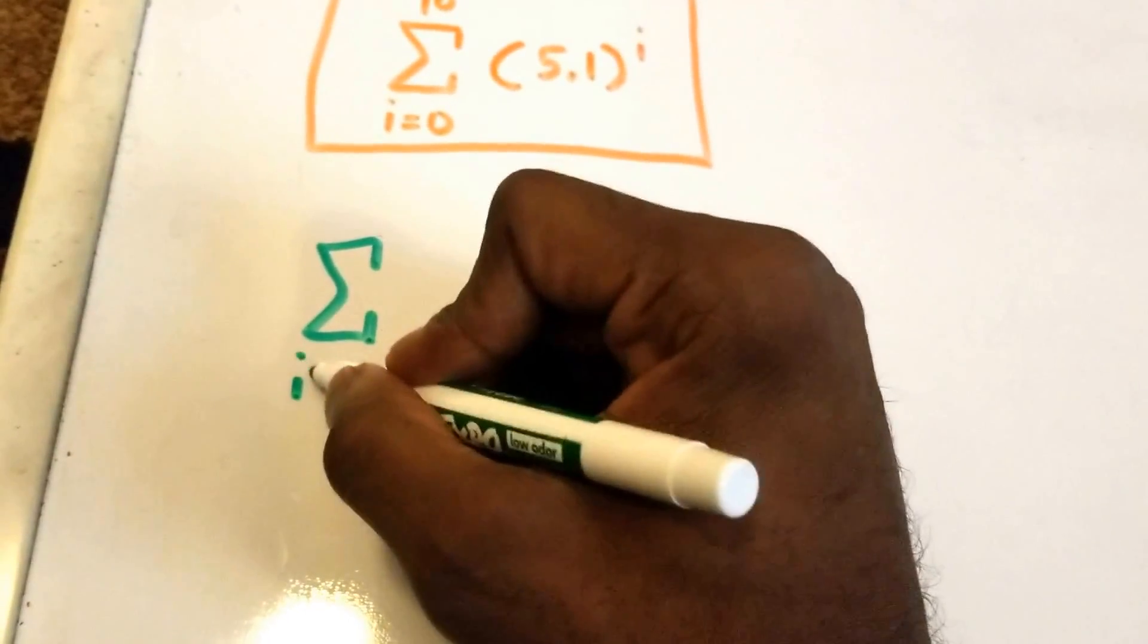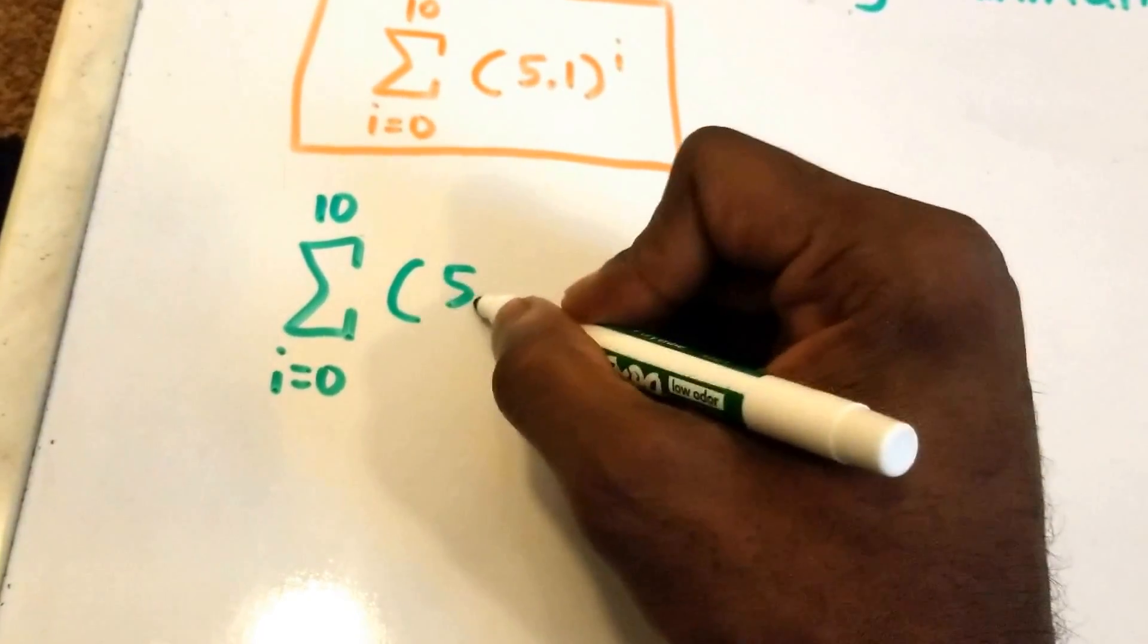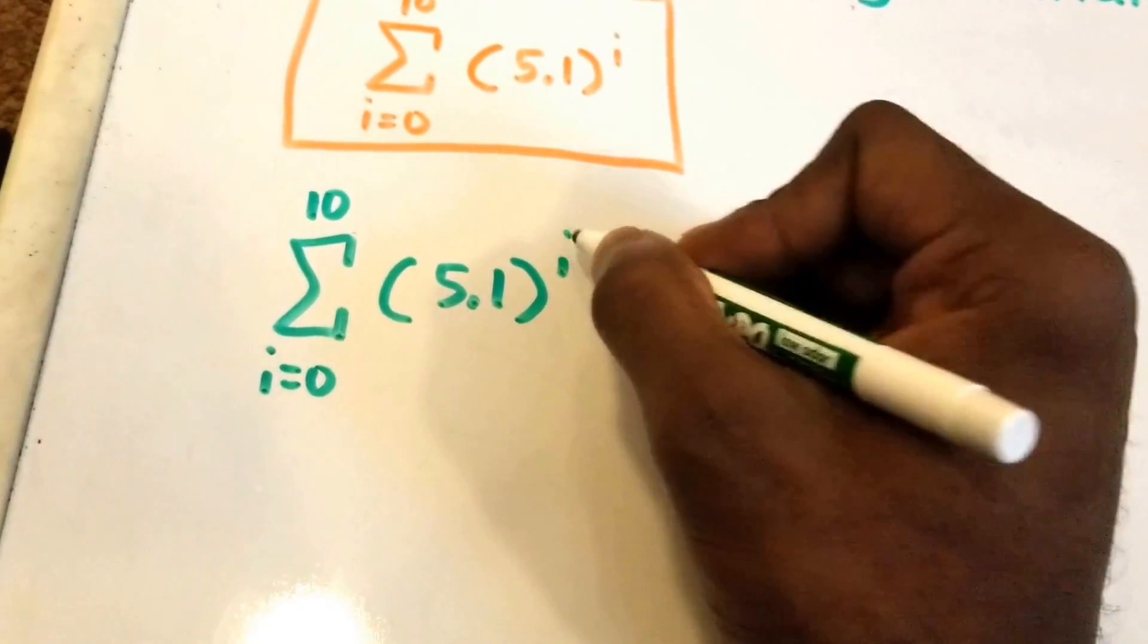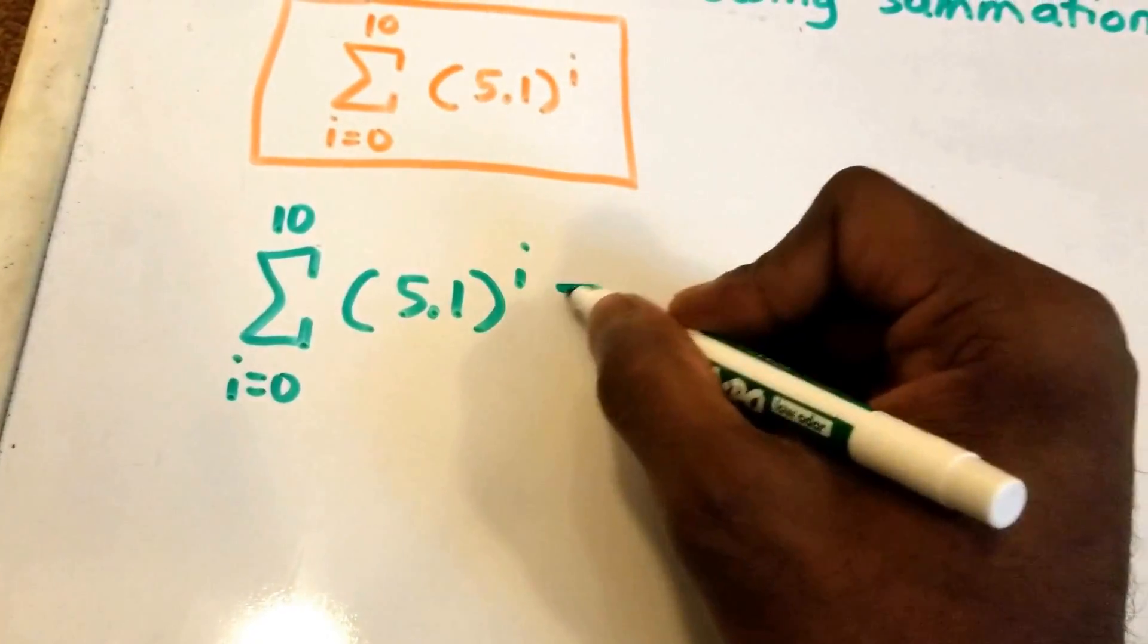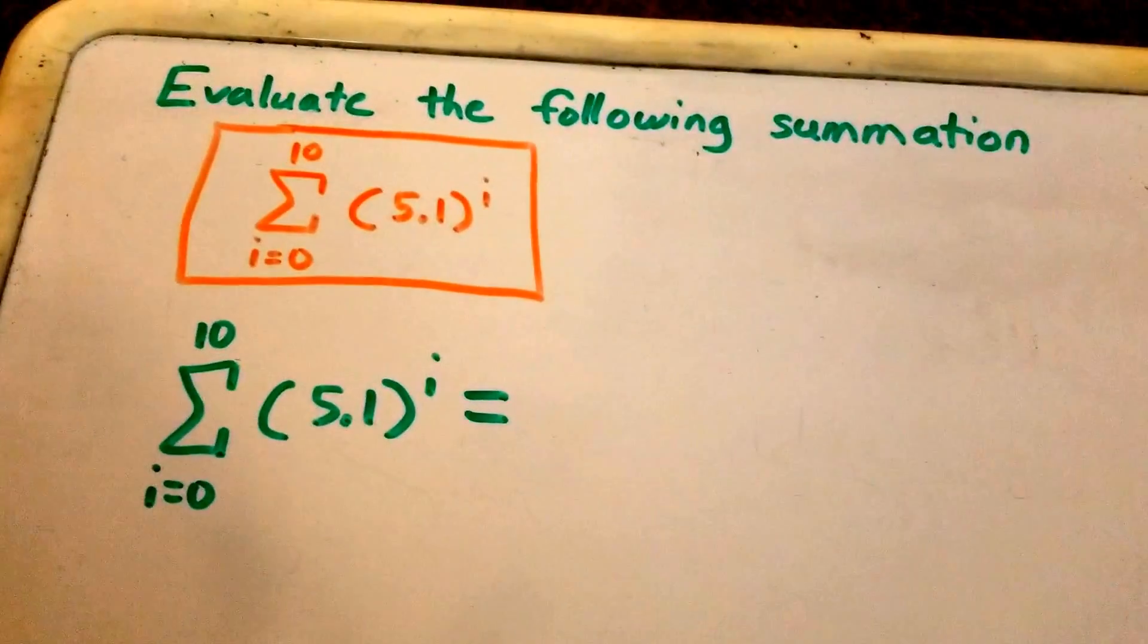What I'm going to do is rewrite it so it starts from i equals 0 all the way to 10 of (5.1)^i. What we can do here is use a formula to figure this out.